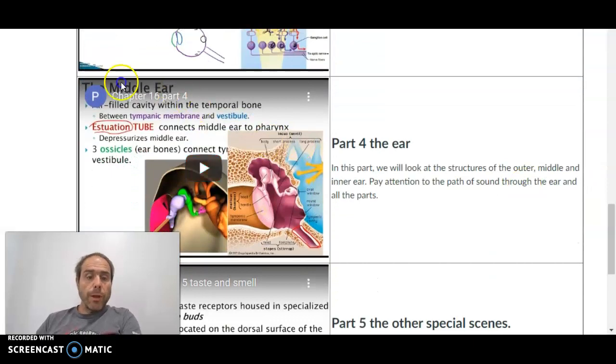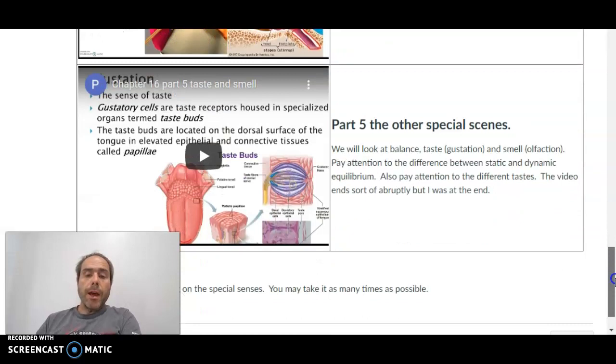Then we have one lecture on the inner ear. We're going to focus on the path of sound, what the different structures do of the inner ear. Then we have taste and smell. And there's going to be a little bit of balance. The balance, I want to know what static equilibrium is, what dynamic equilibrium is, and where the receptors are. There are going to be two questions on balance.